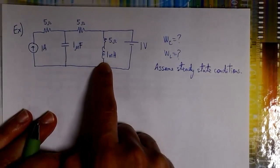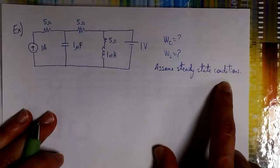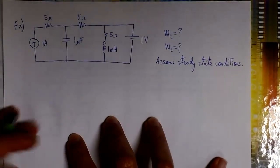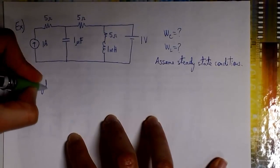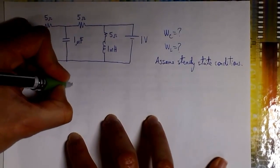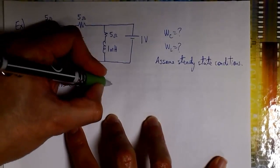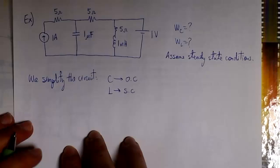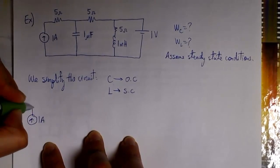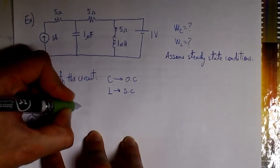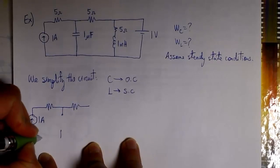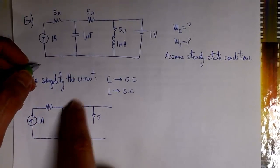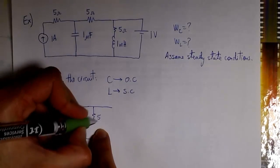We're assuming steady state conditions, and we want to find the energy stored in the capacitor and the energy in the inductor. Since they are in a steady state, we can simplify the circuit by replacing the capacitor with an open circuit and replacing the inductor with a short circuit. So C is an open circuit and L is a short circuit under steady state conditions. We can redraw the circuit: here we have the open circuit replacing the capacitor, and here we put a short circuit replacing the inductor.